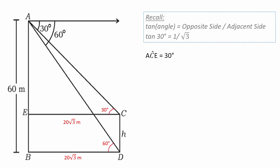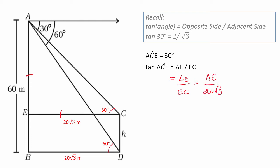Next, angle ACE is 30 degrees — because these two lines are parallel, alternate angles give us 30 degrees. So tan ACE equals AE over EC. We have EC = 20 root 3, and tan ACE is tan 30, which is 1 over root 3. So 1 over root 3 equals AE over 20 root 3.